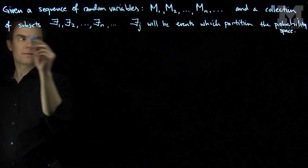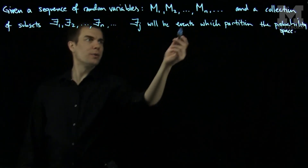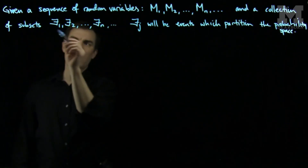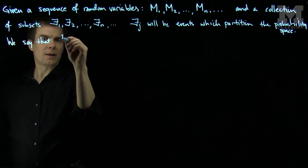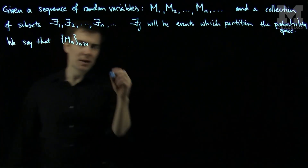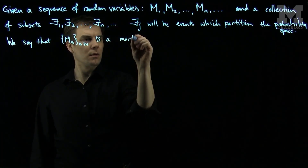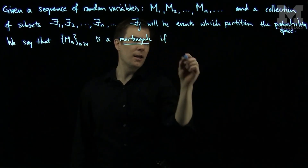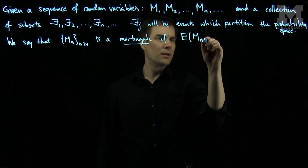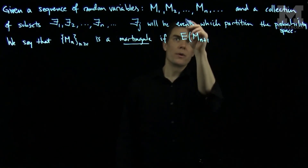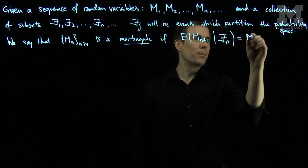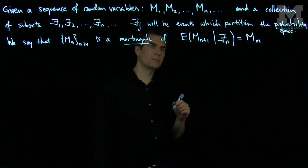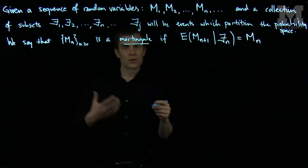If F is one of these sets, we can condition these random variables on these collections of information. We think of F1, F2, ... as information, or subsets of the probability space. We say that the sequence Mn (n ≥ 1) is a martingale if the conditional expectation of the (n+1)th random variable given the information from the nth subset collection is the previous term in the sequence. So this is the definition of what a martingale is. Let's see a few examples.